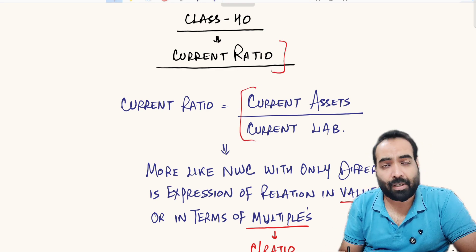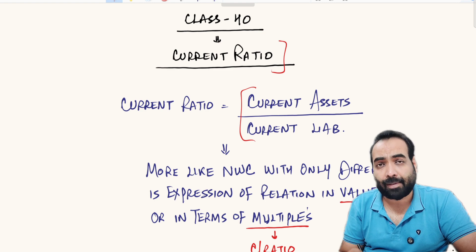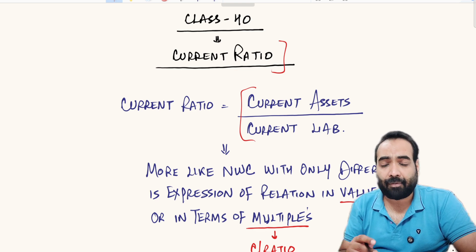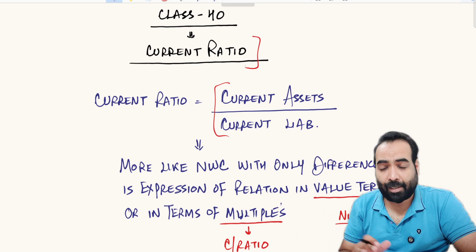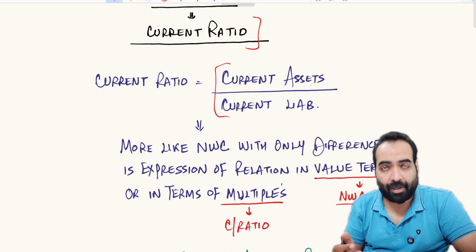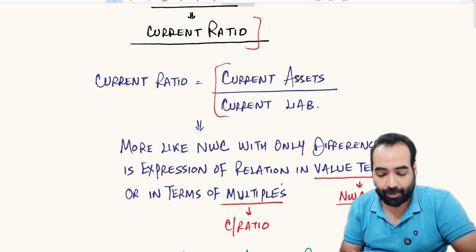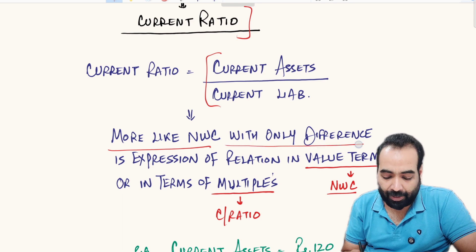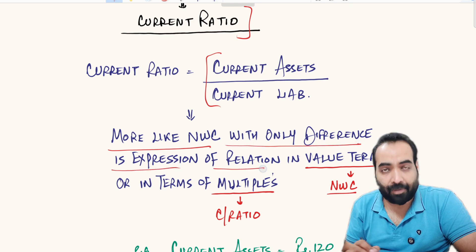What is current ratio? The simple formula of current ratio is current assets upon current liabilities — total current assets upon total current liabilities. You may remember that in NWC we used the same two terms: current assets and current liabilities. We calculated their difference and interpreted various meanings from the outcome. Current ratio is not a different thing — just the presentation is a bit different. In current ratio we are showing it in terms of a numerator and denominator.